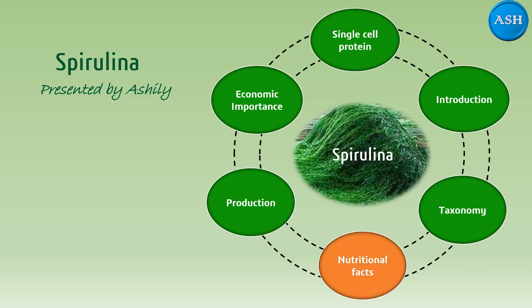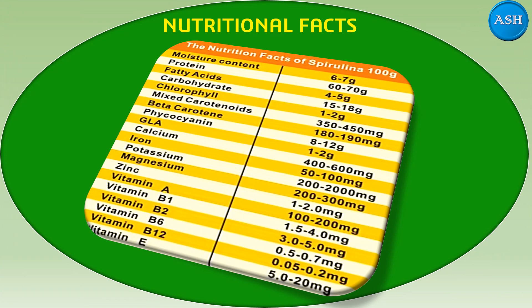Now, how many nutrients are present in Spirulina? If you consider 100 grams of Spirulina, the nutritional facts are as follows: moisture content is 6 to 7 grams, and protein content is 60 to 70 grams. So out of 100 grams, almost 60 to 70 grams is only protein. The leftover parts are other trace elements and compounds — fatty acids, carbohydrates, chlorophyll — each present in different gram amounts. There are also mixed carotenoids, beta-carotene, phycocyanin, and GLA.